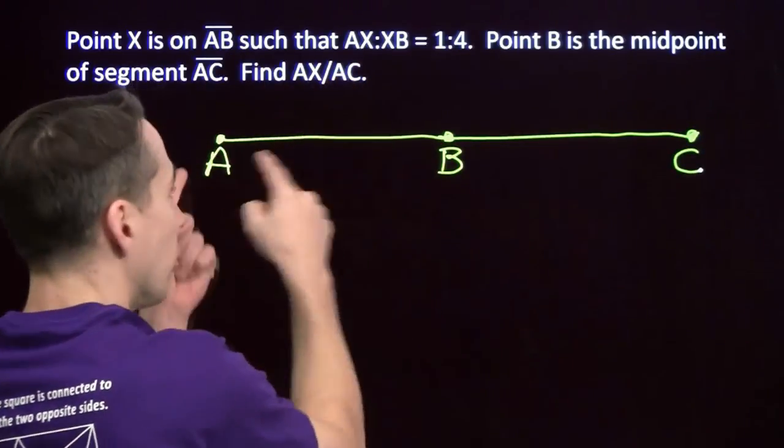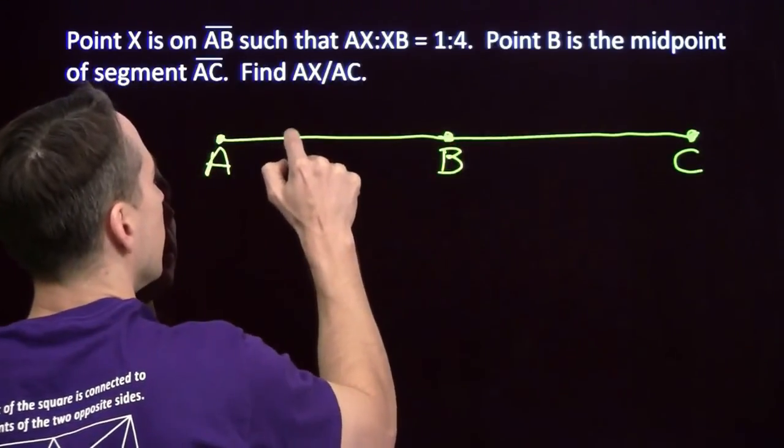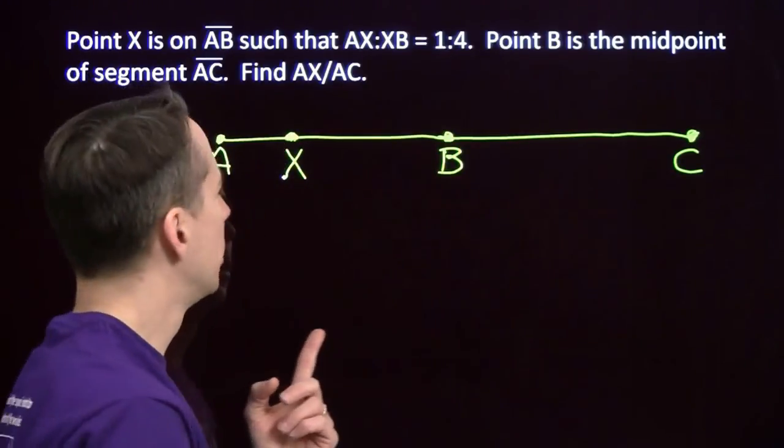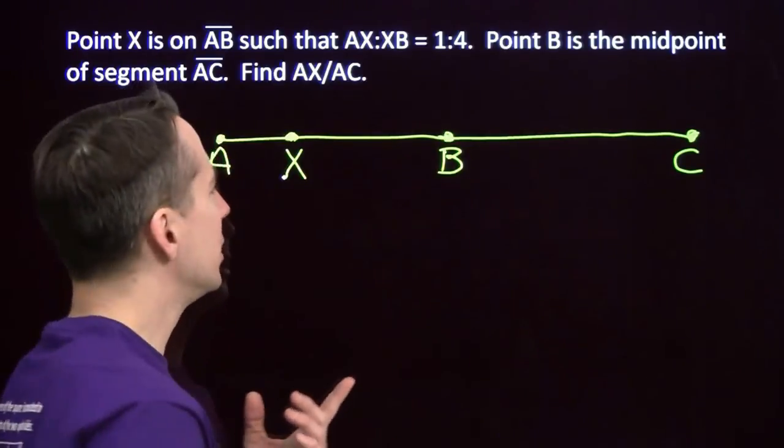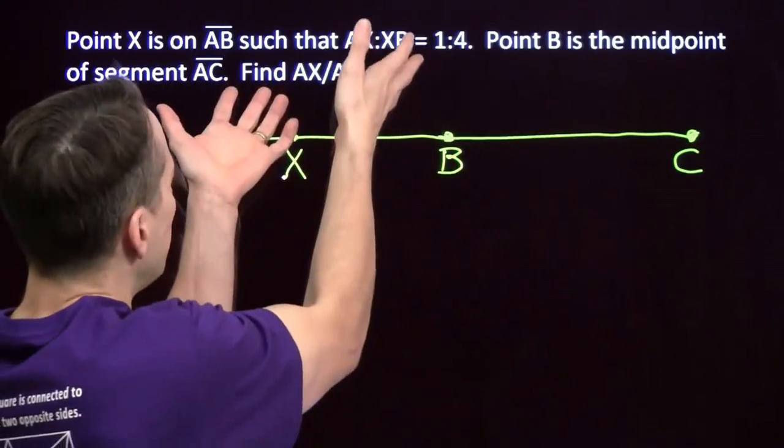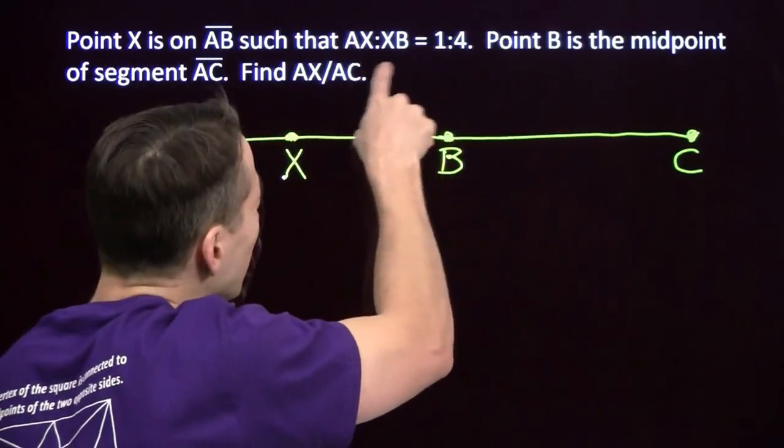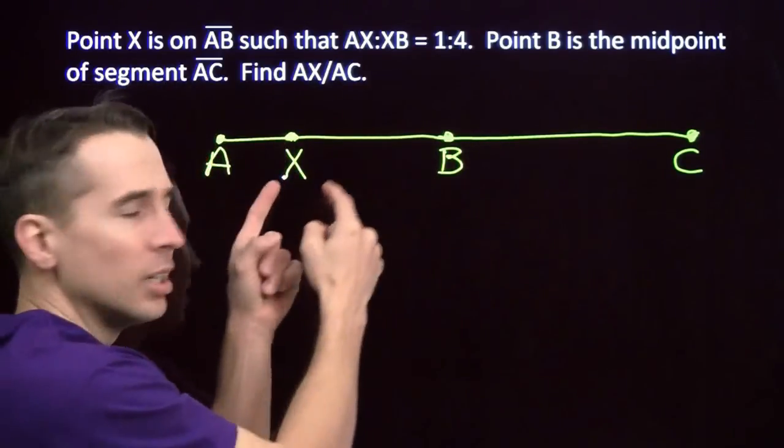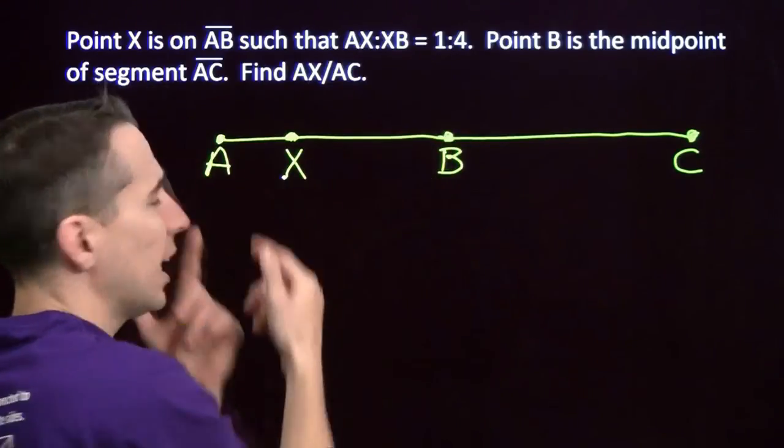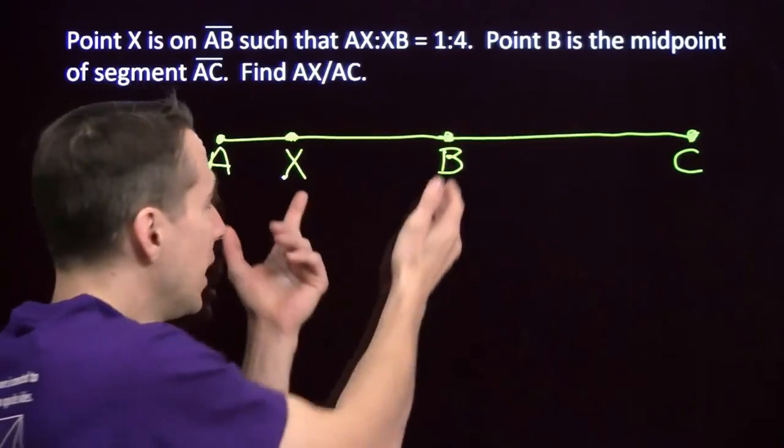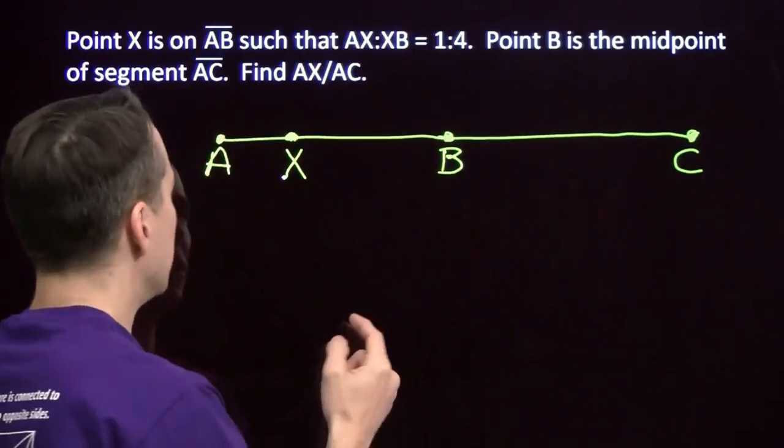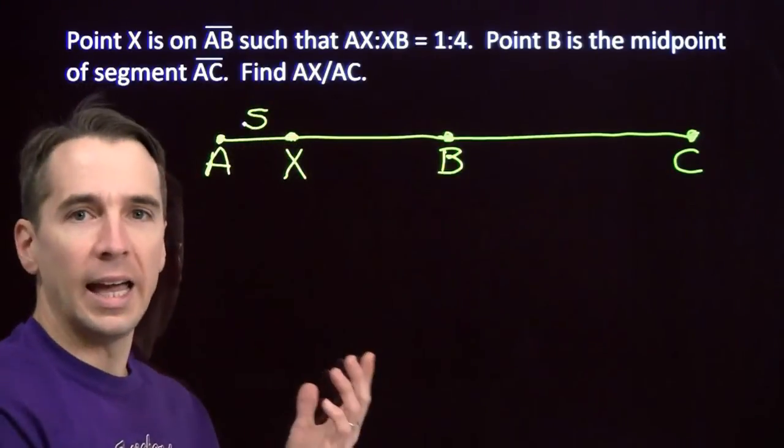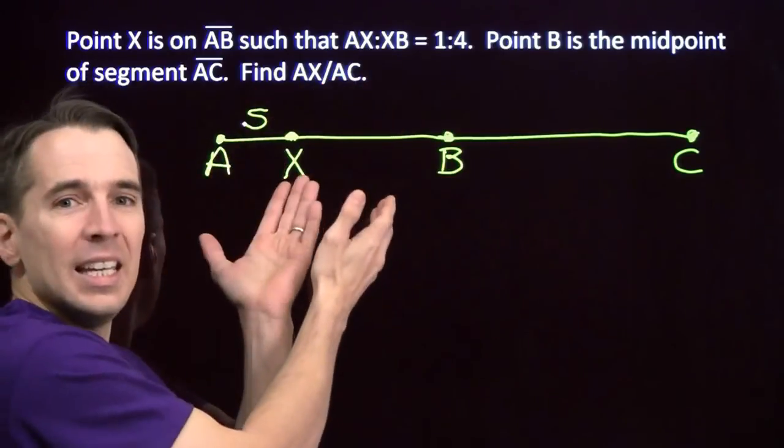We also know that point X is on AB and is closer to A than it is to B. And we need to find the ratio of AX to AC. But we don't know any of these lengths. Actually, we don't even have all the information from the problem in our diagram. We don't actually have this information in our diagram yet - this AX to XB is 1 to 4. We have to capture the fact that whatever AX is, XB is 4 times as large. So if AX is 1, XB is 4. If AX is 3, XB is 12. Whatever AX is, we can use a variable. That'll stand for whatever AX is. And that's how we can get this information into the diagram.